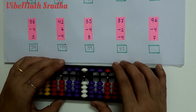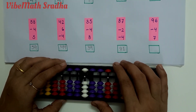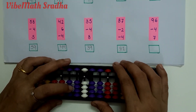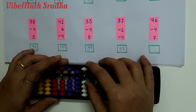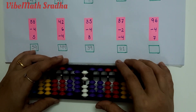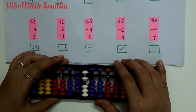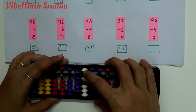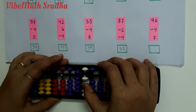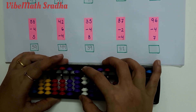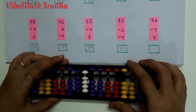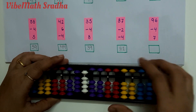The tenth example is 96 minus 4 plus 7. 96 minus 4, applying minus 5 plus 1, plus 7. Answer is 99.